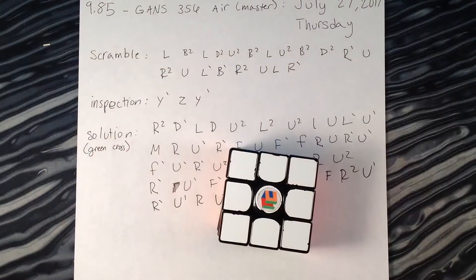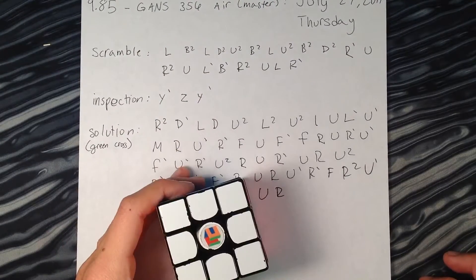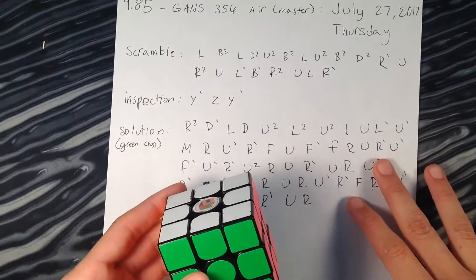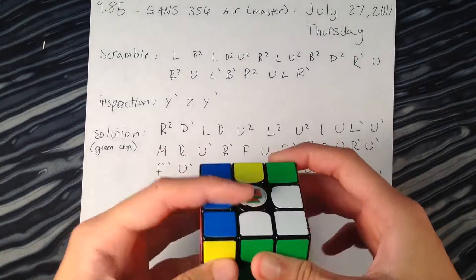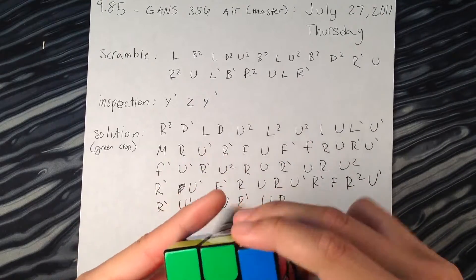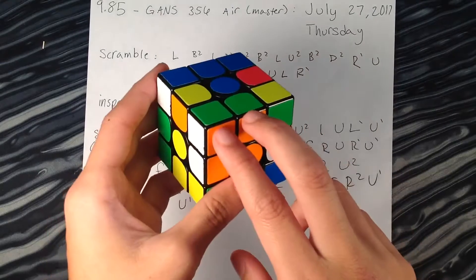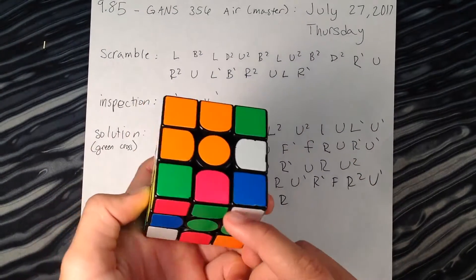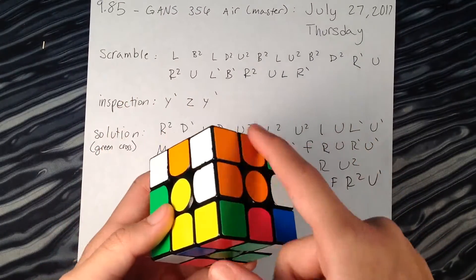So that was a really easy scramble there because you already had the first pair. The pairs were really easy to do. Yeah see, we had that block, this little block right there, and then it was pretty easy to preserve.